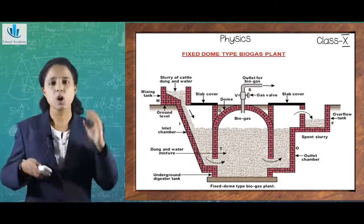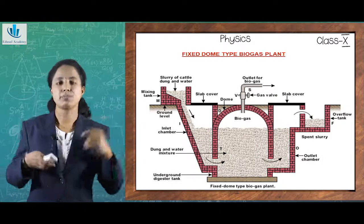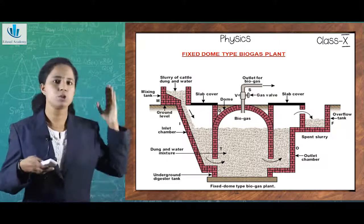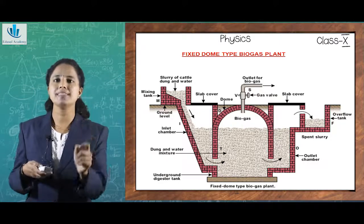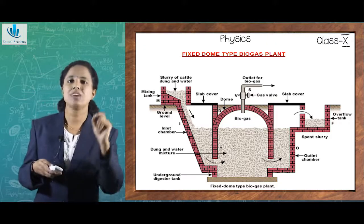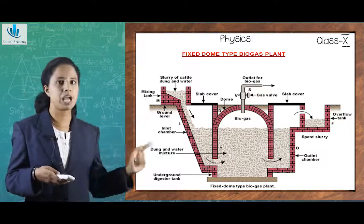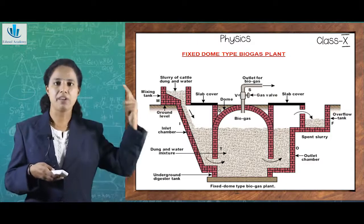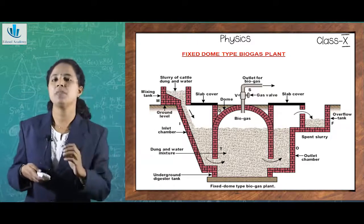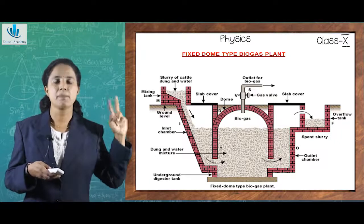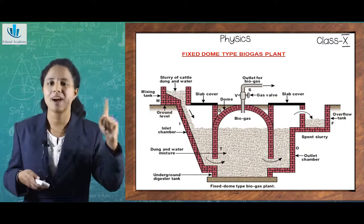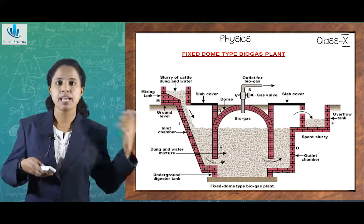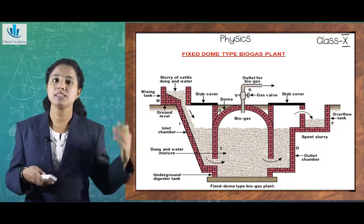This diagram depicts how a biogas plant works. It is a fixed dome-type plant. Its main parts include a mixing tank (M), an underground digester tank, and an outlet. Two main outputs are obtained: useful biogas and the remaining slurry. In the mixing tank, cow dung, sewage, waste, plant waste, and animal matter are mixed with water. The mixed slurry is then sent into the underground digester tank.